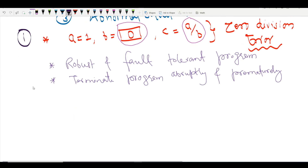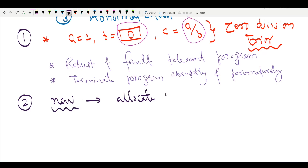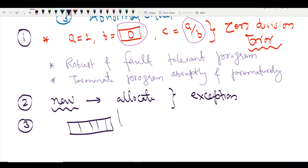There are other common types of exceptions. For example, if you use the new operator to allocate space but it cannot find the specified space, it will throw an exception. Similarly, if you have a vector and try to access an index out of bounds, that will throw an out-of-range exception. In C++, we have a standard mechanism for handling these kinds of errors, which is called exception handling.